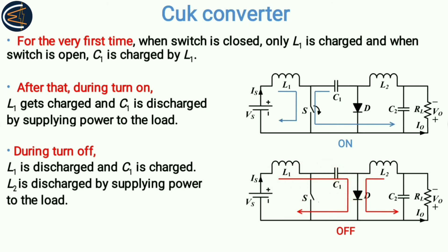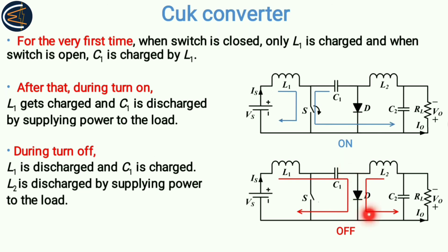Another thing that happens is that inductor L2, which was charged initially by the discharging capacitor, also maintains current in the same direction. It discharges via the diode and supplies power to the load. This is the overall working principle of the Ćuk converter.